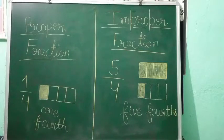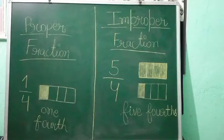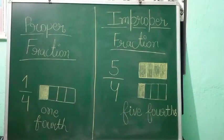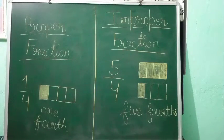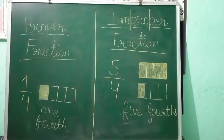An improper fraction is a fraction whose numerator is equal to or greater than its denominator. One-fourth (1/4) is an example of a proper fraction, whereas five-fourths (5/4) is an example of an improper fraction. Thank you very much.